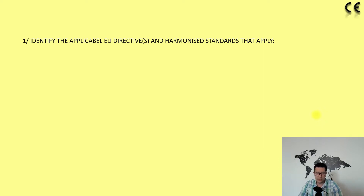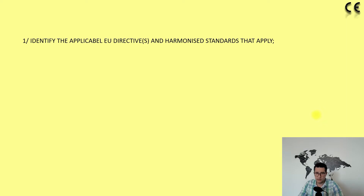The European Commission has made directives for product groups that require a CE marking. In these directives you will find the applicable EU legislation for each product group, and in some cases be very careful — more than one directive can apply to the same product. For example, electrical and electronic products fall under the Low Voltage, EMC, and RoHS directives.